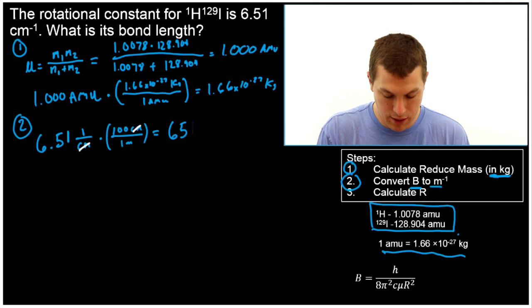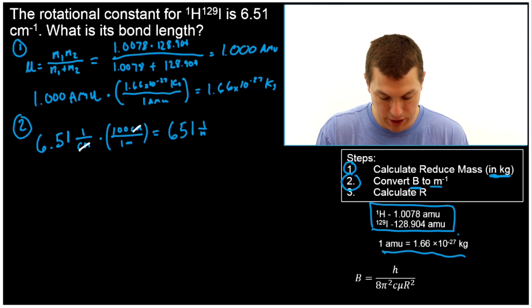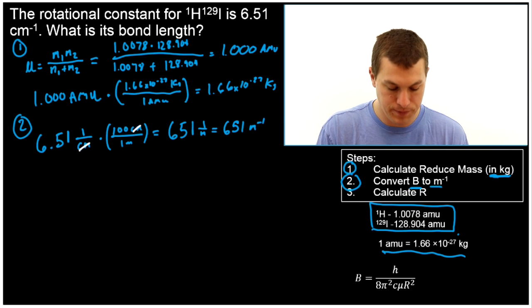And when I do that, I get 651 per meters, one over meters, or another way to write it, 651 meters to the minus one.